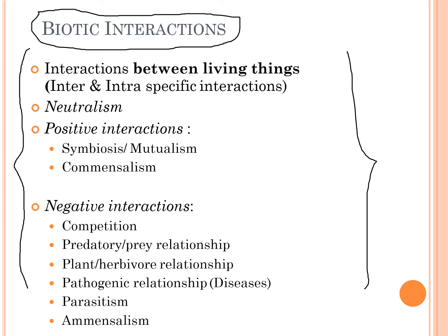Biotic interactions are interactions between living cells, which can be inter- or intra-specific interactions. We have neutralism, which is a term used in biotic interactions where nothing is shared that benefits anyone — no one gets harmed and no one gets extra benefit. There are also positive interactions under biotic interactions.